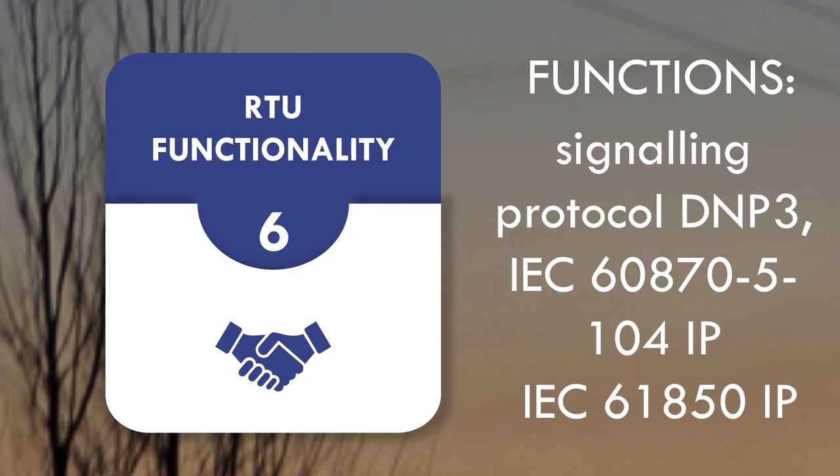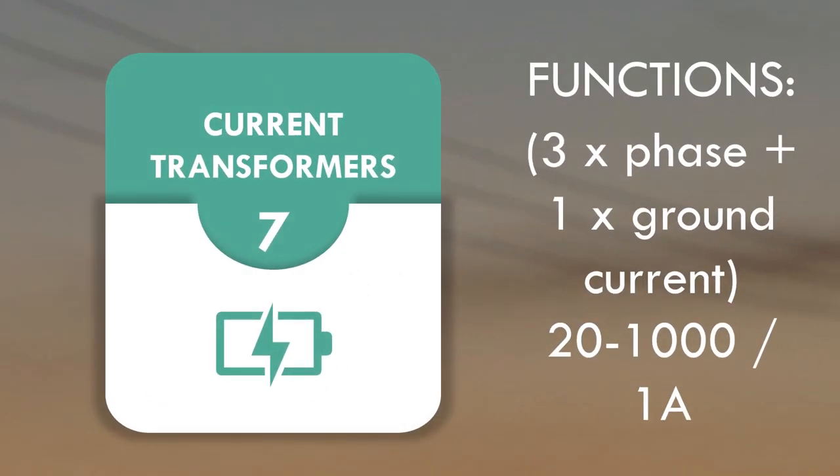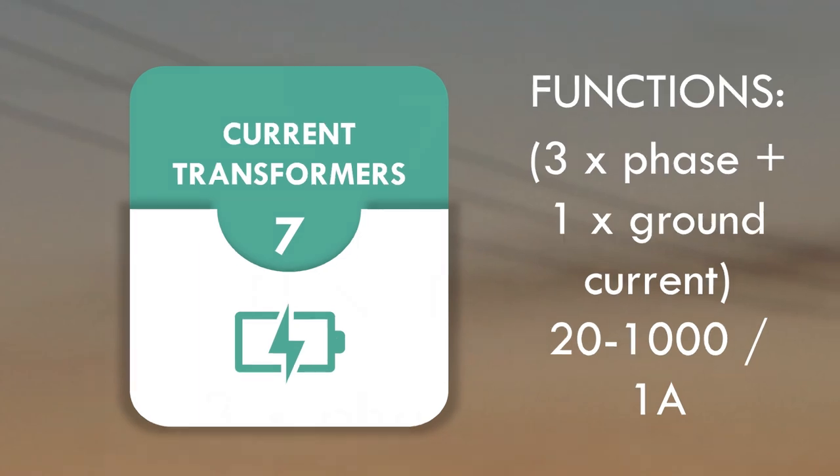Built-in signal protocol: DNP3 Serial and IP, IEC 60870-5-101 Serial, IEC 60870-5-104 IP, IEC 61850 IP. Built-in current transformers: 3 built-in phase current transformers and 1 ground current transformer which is winded 20 to 1 for best ground fault sensitivity.